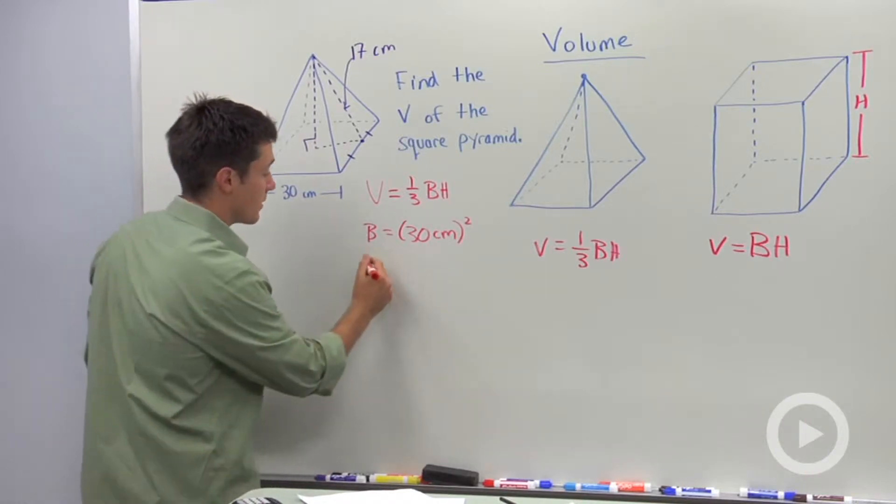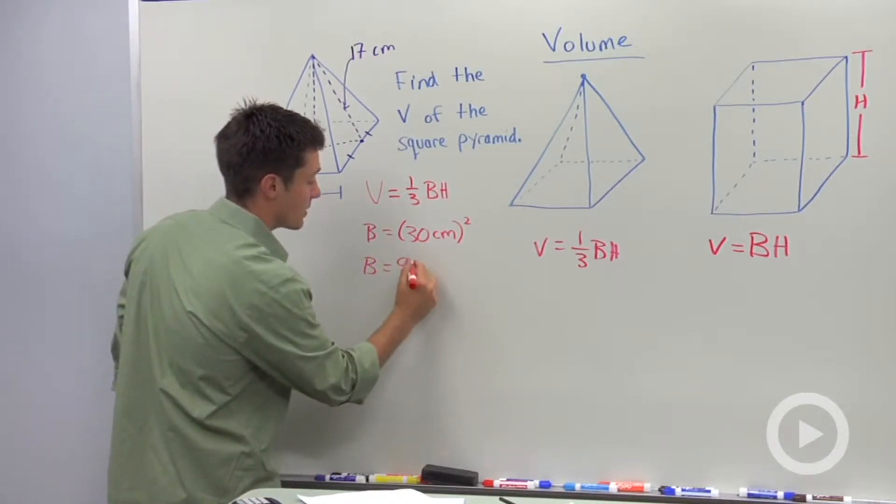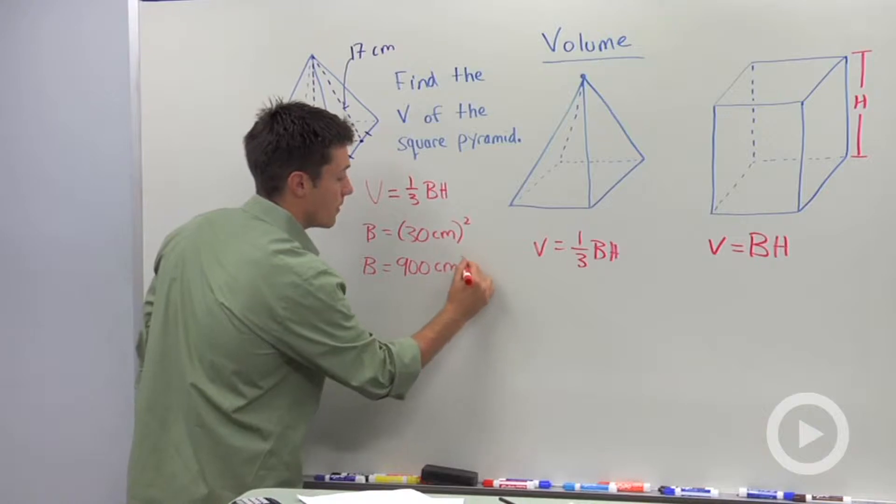Well, 30 squared is 900, so we're going to say base area is equal to 900 square centimeters.